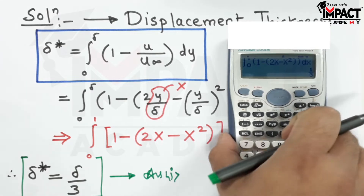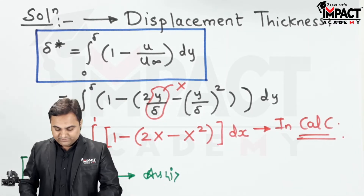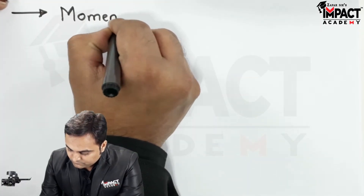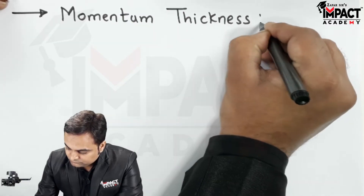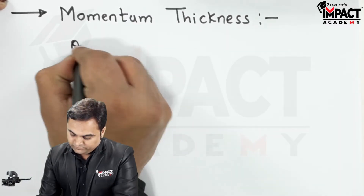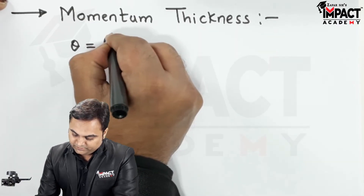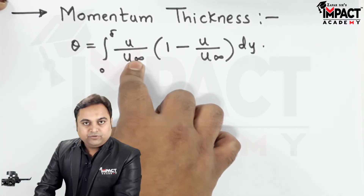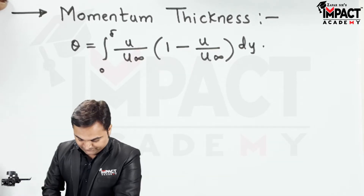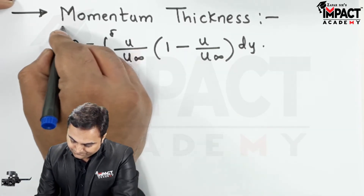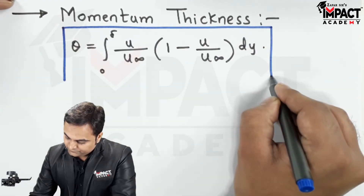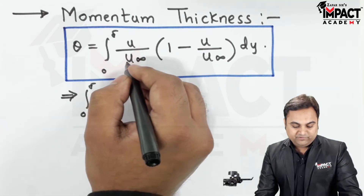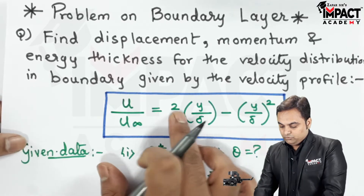Now similarly I will find the momentum thickness. The formula is: theta equals integration from 0 to delta of (u/u∞)(1 − u/u∞) dy. Substituting u/u∞ = (2y/δ − (y/δ)²).